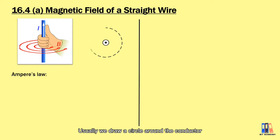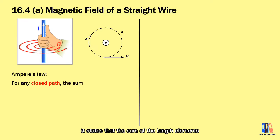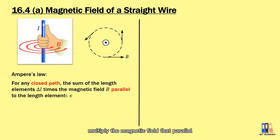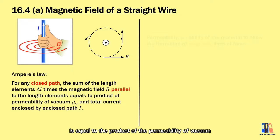Usually we draw a circle around the conductor. Based on Ampere's Law, it states that the sum of the length elements multiplied by the magnetic field parallel to those length elements is equal to the product of the permeability of vacuum and the total current enclosed by the path.